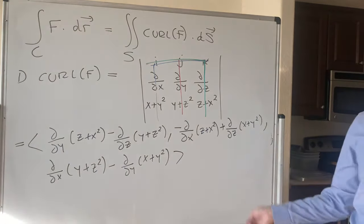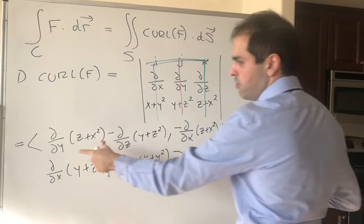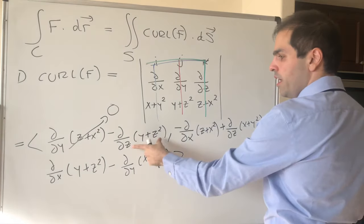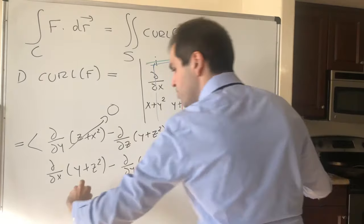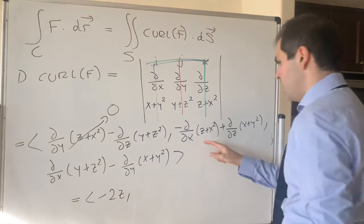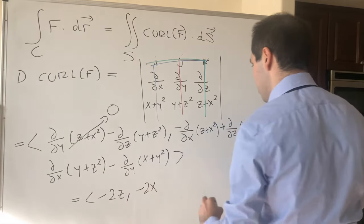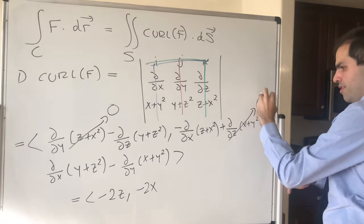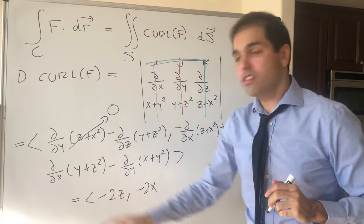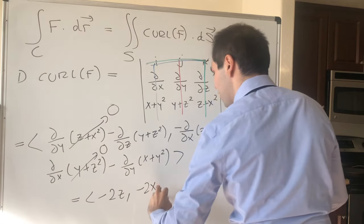Now I know this looks complicated, but it simplifies so beautifully. The first term disappears because there's no y; the next just becomes −2z. Then we get −2x, and the zero term disappears. And lastly, we get −2y. So the curl of f is simply (−2z, −2x, −2y).